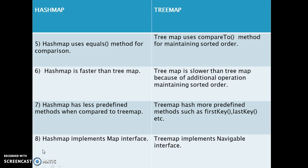The last difference is HashMap implements the Map interface, whereas TreeMap implements the NavigableMap interface.